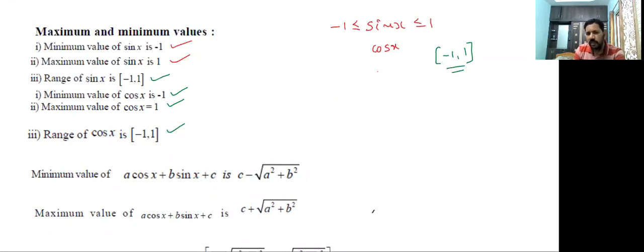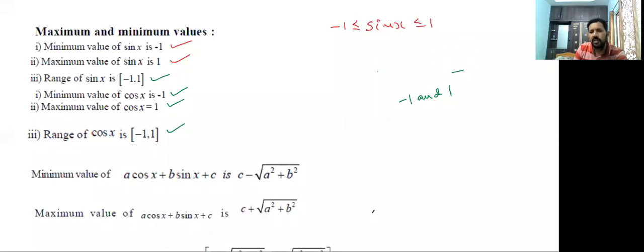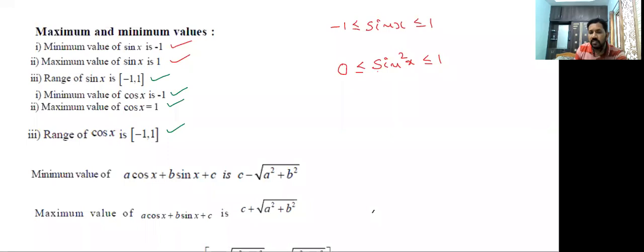Sometimes they will ask for the extreme values of sine x — those are minus 1 and 1. Extreme values means minimum and maximum. Now, what is the range of sine square x? Since there is a square, it cannot be negative. So the range of sine square x is 0 to 1, and same for cos square x. The minimum of sine square x is 0 and the maximum is 1.